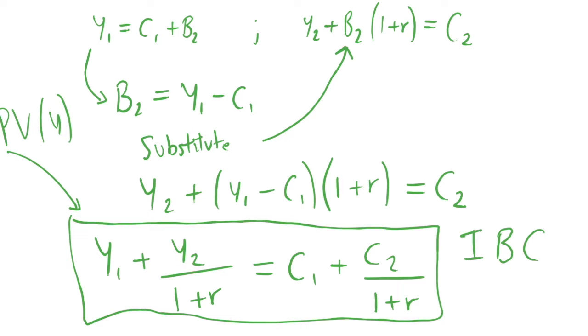And on the right hand side we say that this must be equal to the present value of consumption. Again, consumption in period 1 is valued slightly more than in period 2, and this discount factor is the interest rate. So our present value of income must equal our present value of consumption. We consume all of our income because we are not satiated, we want as much consumption as possible, so we exhaust our budget.